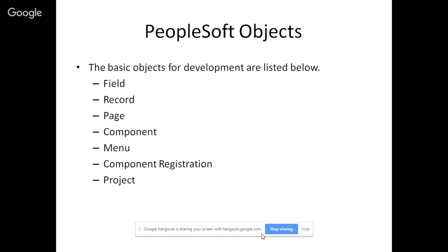These are the main PeopleSoft objects covered in this topic: properties, how to create these objects, and how to use them in PeopleSoft, including how to create a final project. Field is the smallest object in PeopleSoft. Record is a collection of fields. Pages are the UI. Component is a collection of all the pages. Menu is similar to a restaurant menu where you select where you want to go. Component registration keeps everything in sync — page, component, record, menu — and is very important.